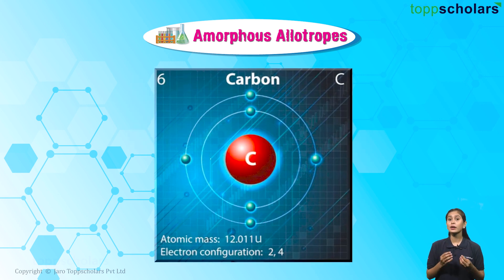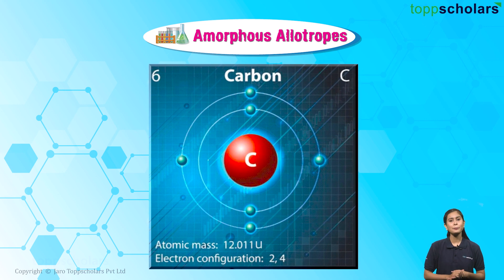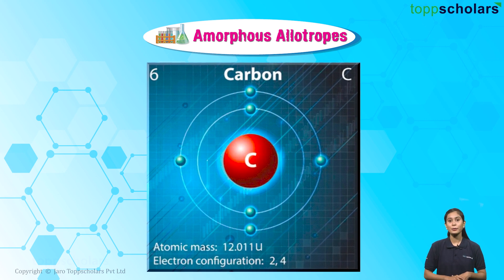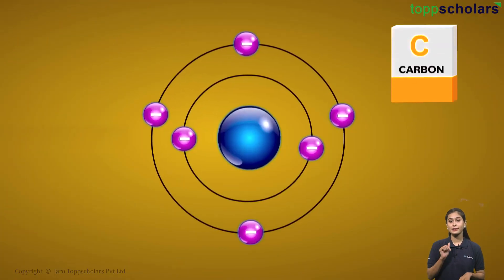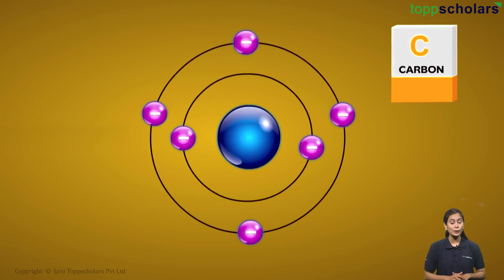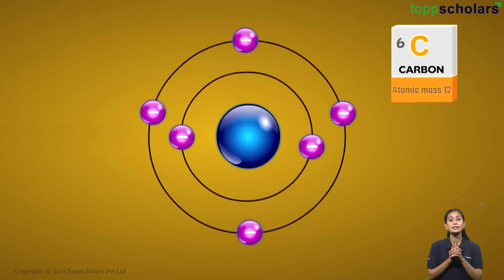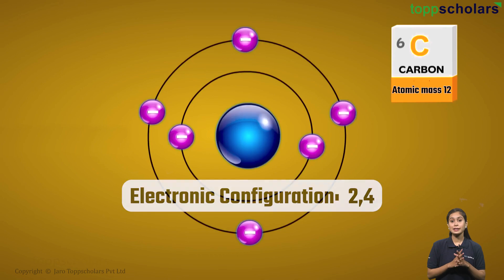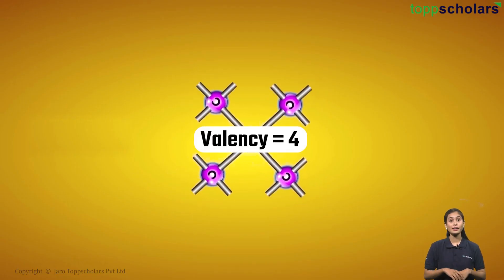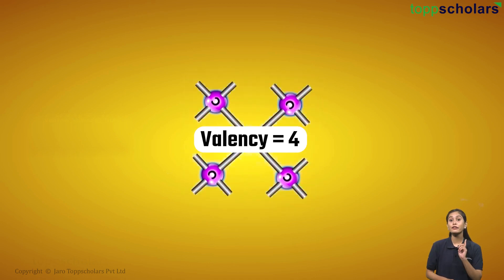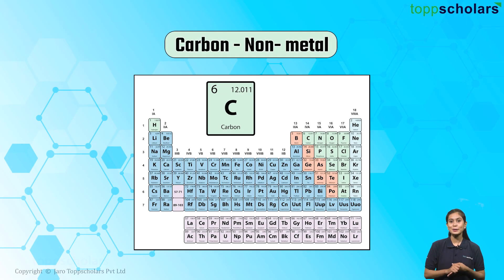Now that we are talking about carbon, let us see some basic details regarding carbon. It is represented by the letter C. Its atomic number is 6 while the atomic mass number is 12. The electronic configuration is 2,4. This means it has four valence electrons in its outermost shell making its valence 4. It is a non-metal.